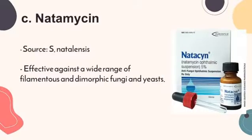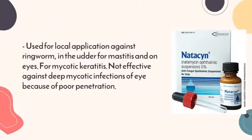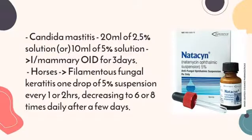The last example is Natamycin, or Pimaricin. It is obtained from Streptomyces natalensis and is effective against a wide range of filamentous and dimorphic fungi and yeast. It is used for local application against ringworm and in the treatment of mastitis. For the treatment of Candida mastitis, 20 mL of 2.5% solution or 10 mL of 5% solution is given for 3 days. For filamentous fungal keratitis in horses, 1 drop of 5% suspension every 1 to 2 hours, decreasing to 6 to 8 times daily after a few days.